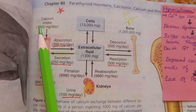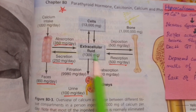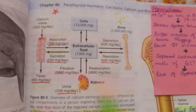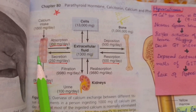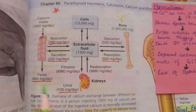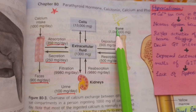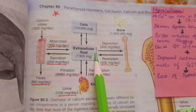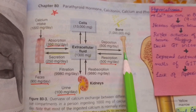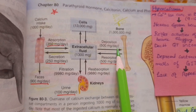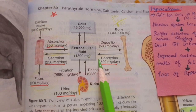Regarding calcium exchange in different tissues: if daily calcium intake is 1000 mg/day, about 350 mg/day is absorbed into extracellular fluid, promoted by vitamin D, while about 250 mg/day is secreted from ECF into the intestine via digestive juices, and 900 mg/day is excreted in feces. In bone — the largest calcium reservoir — deposition and resorption are equal: 500 mg/day is deposited into bone and 500 mg/day is absorbed from bone into ECF, aided by parathyroid hormone.